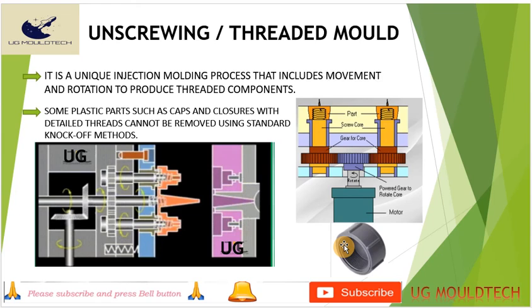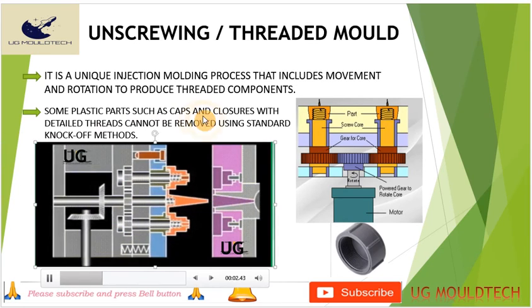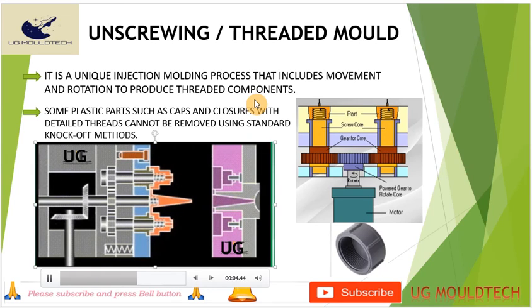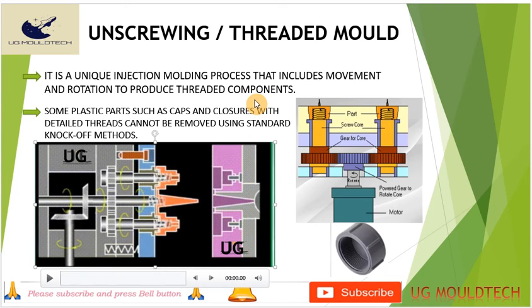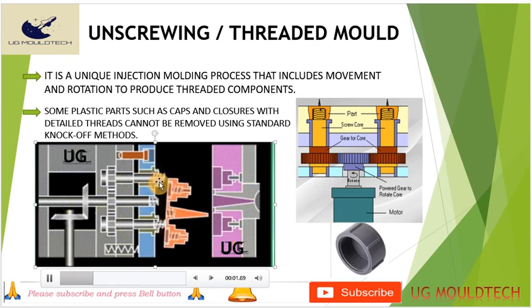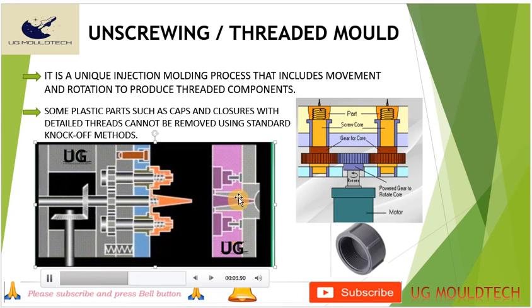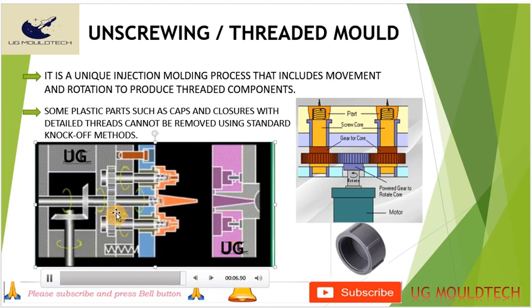Next we move on to the unscrewing or threaded mold. All caps — threaded, internal threaded — are made from this unscrewing or threaded mold. There will be a rotating core and a gear system which pulls back. When the mold opens, the core will rotate with the help of this gear mechanism and the product will be ejected out.